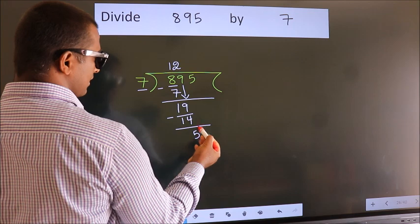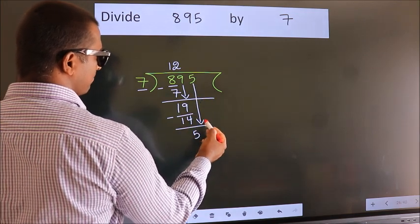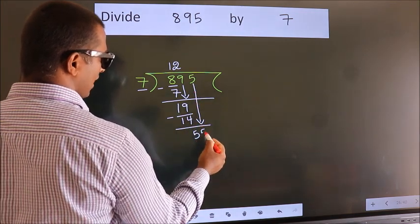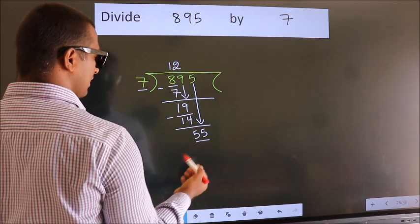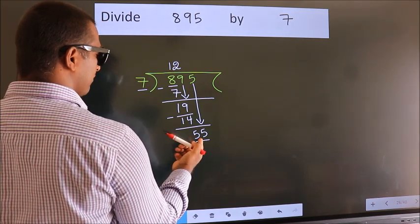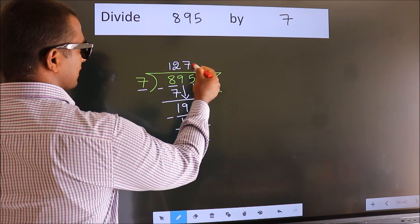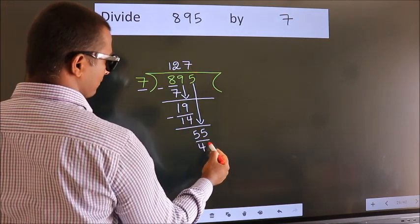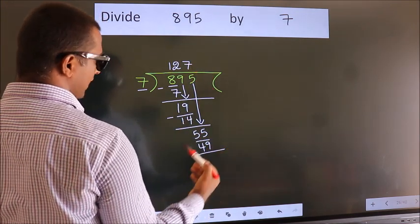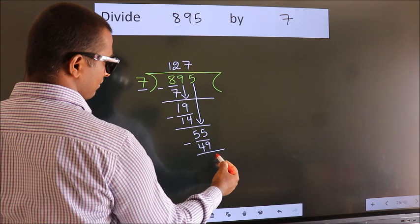After this, bring down the beside number. So 5 down. So 55. A number close to 55 in 7 table is 7 sevens 49. Now we subtract. We get 6.